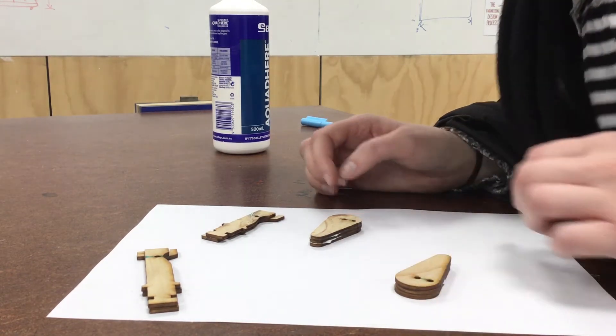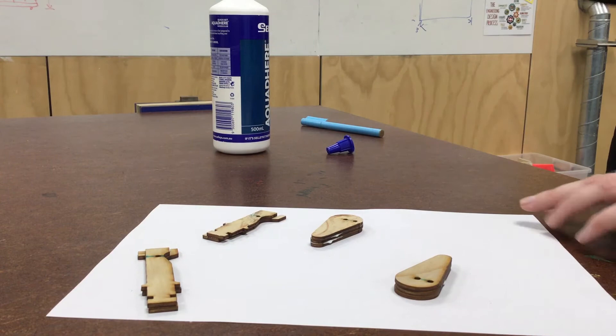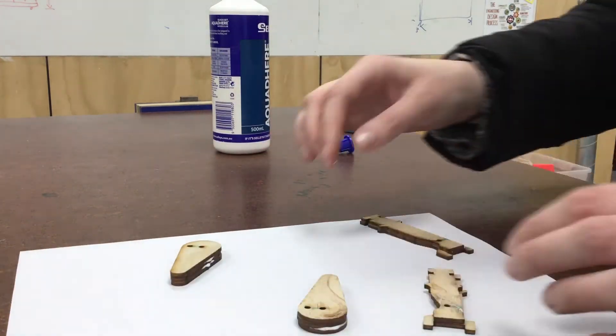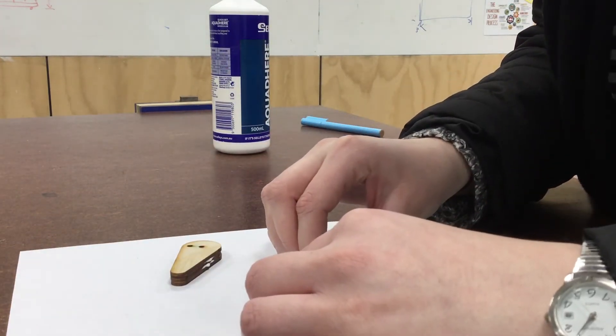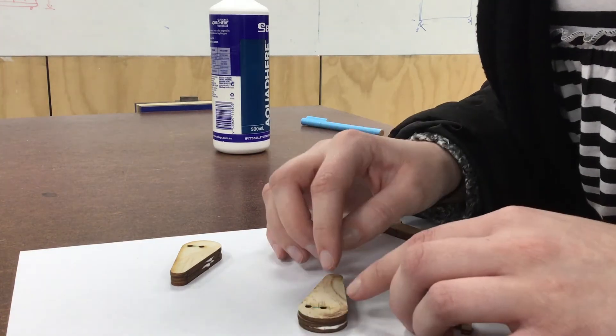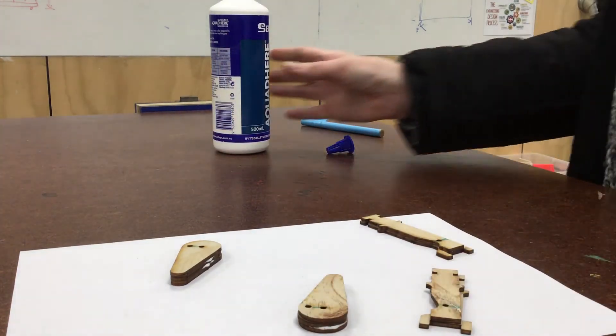Once you've done your two flippers, you will do the other part and try to make sure that they're really well lined up. The glue does make them a little bit slippery.